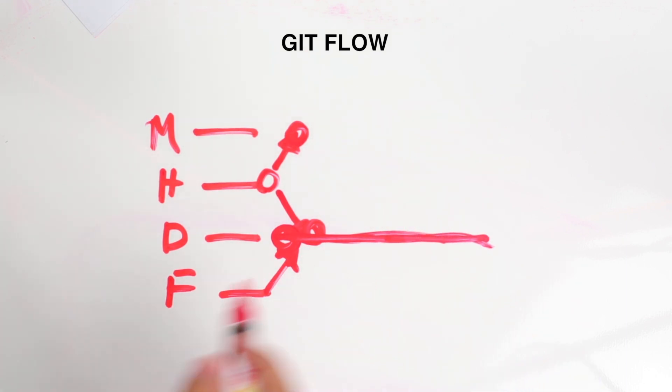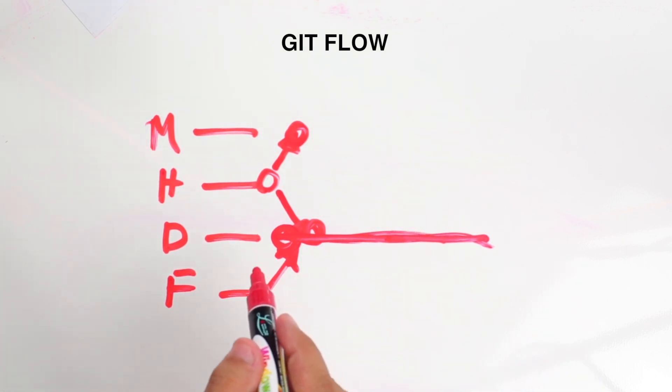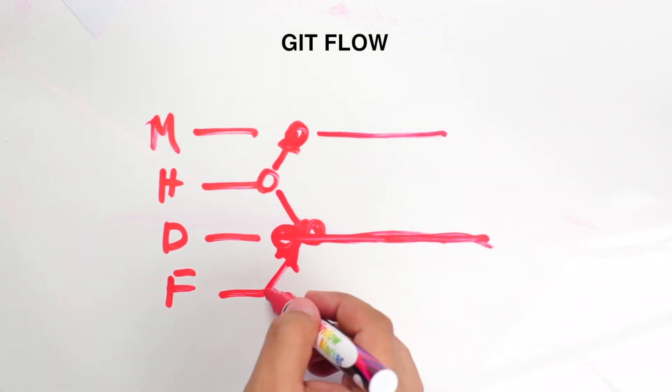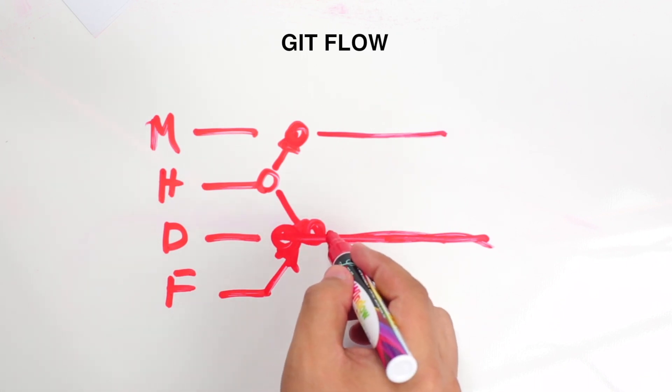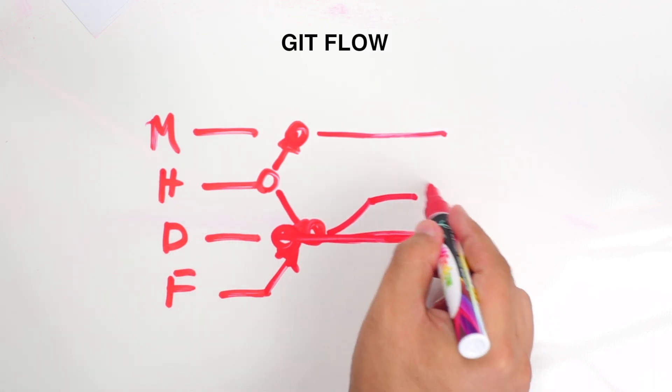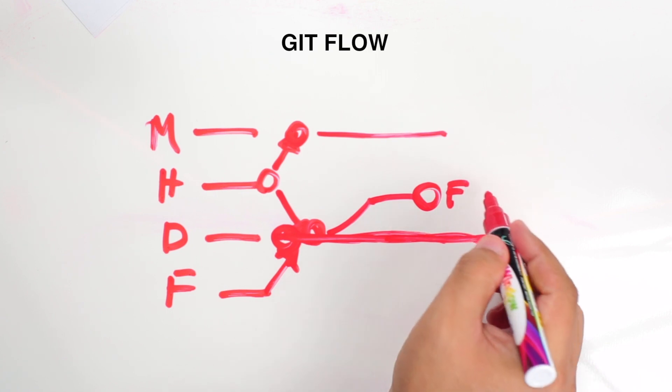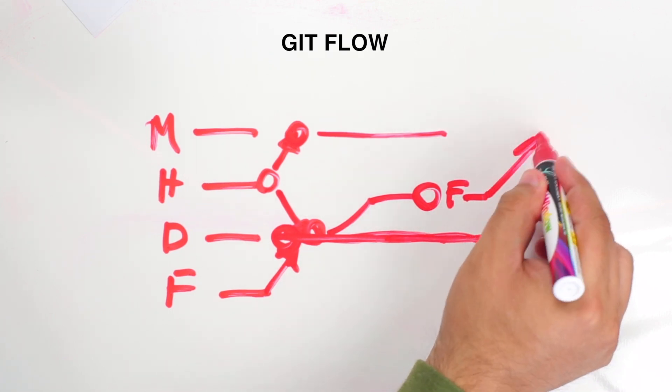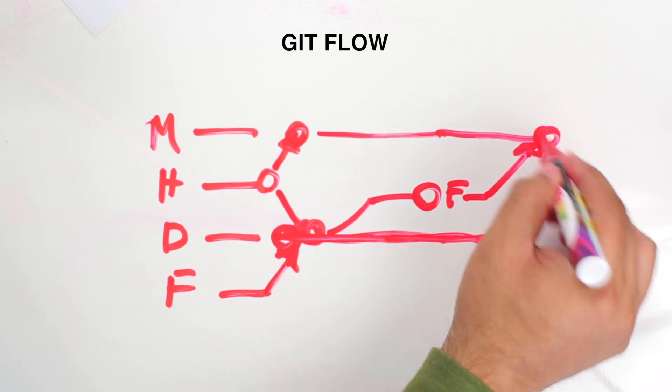Once you merge into the developer branch as a feature, it eventually could also be merged into the primary feature branch, and that feature branch eventually gets put into the master branch and becomes part of the actual code that will be deployed.